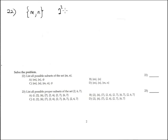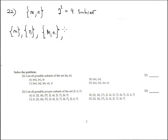Problem 22: we have 2 elements, so 2 to the second power is 4 — we expect 4 subsets. The subsets are: M only, B only, the combination of both, and the empty set. This corresponds with option C.